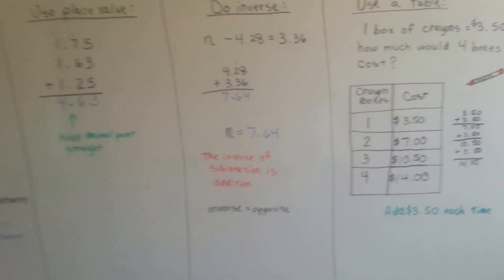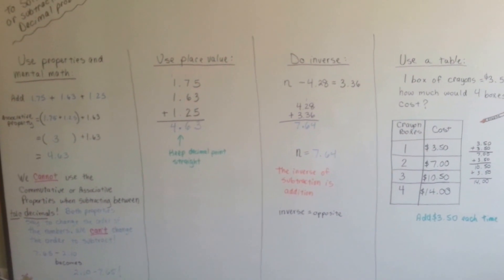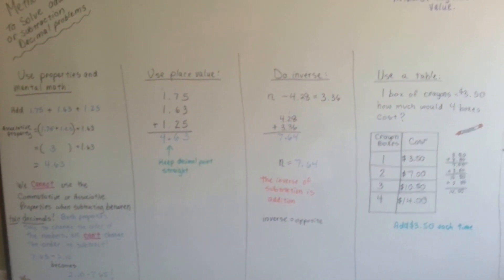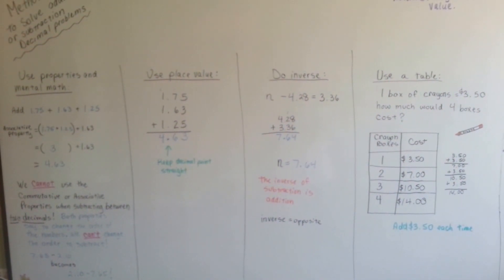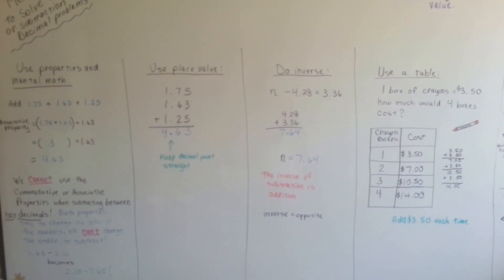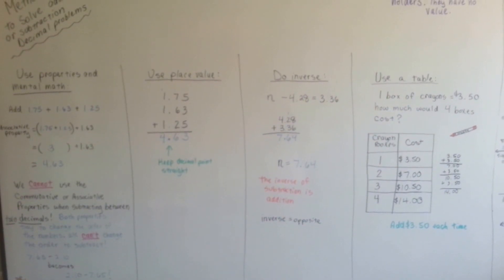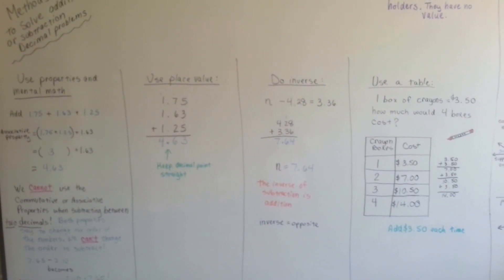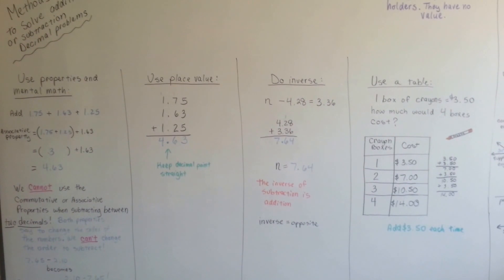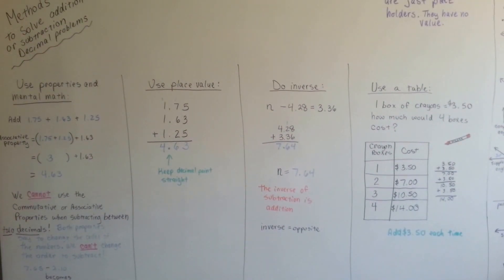So those are some methods to solve addition and subtraction decimal problems. You could even use a calculator, but it's better to do math without a calculator when you're learning because the calculator will end up becoming a crutch. It's better to use your brain and develop your brain and your math abilities. See you next video. Keep up the good work.